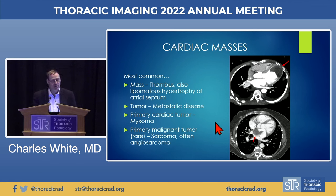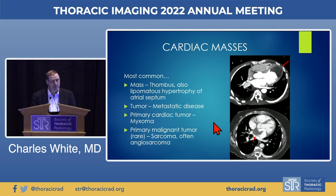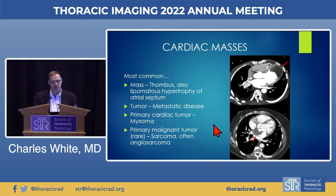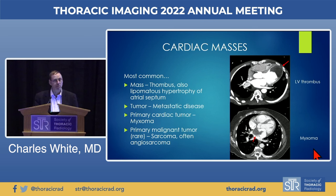Cardiac mass is another indication for cardiac CT. The most common mass is thrombus, followed by lipomatous hypertrophy of the atrial septum. Among tumors, metastatic disease is most common overall. Among primary cardiac tumors, it's going to be a myxoma — generally a left atrial myxoma. Among primary malignant tumors, it's going to be a sarcoma, often an angiosarcoma, though these are extremely rare. Examples shown include a thrombus at the left ventricular apex and a myxoma in the left atrium, typically attaching to the septum.